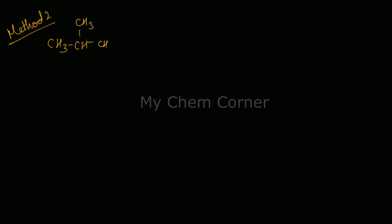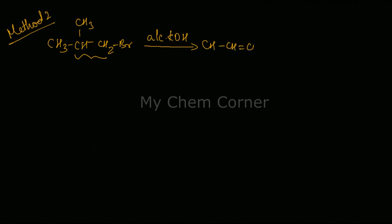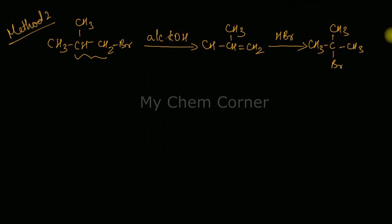Moving to Method 2, I'll try a different C4H9Br structure: CH3CH(CH3)CH2Br — 1-bromo-2-methylpropane. Treating with alcoholic KOH gives a double bond via Saytzeff's rule, forming CH2=C(CH3)CH3. Then treating with HBr via Markovnikov's rule places Br on the carbon with the fewest hydrogens, giving compound C with Br at the secondary position.